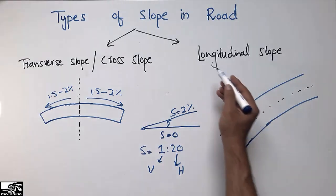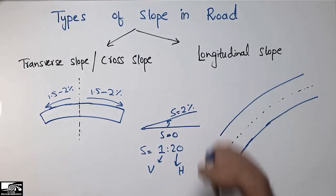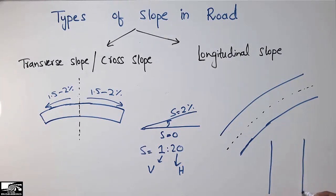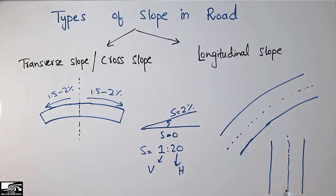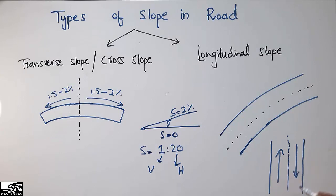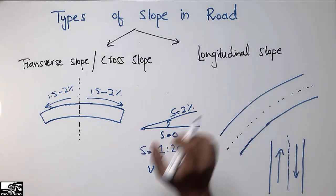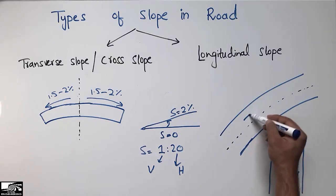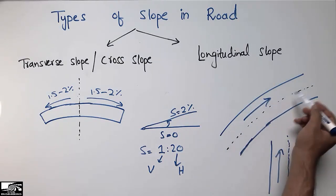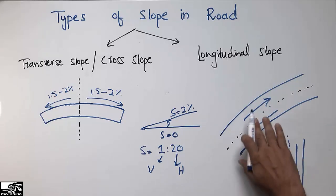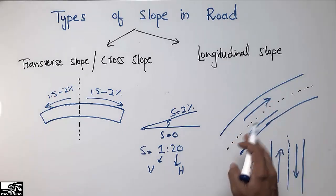The longitudinal slope is the type of slope provided along the length of the road. For example, considering the length of the road and its midsection, traffic moves in one direction on one side and in the other direction on the other side. The slope provided along the length of the road in this way is called the longitudinal slope.